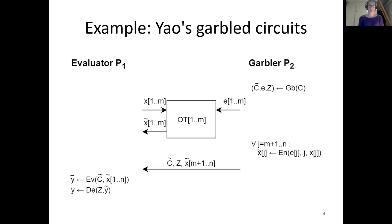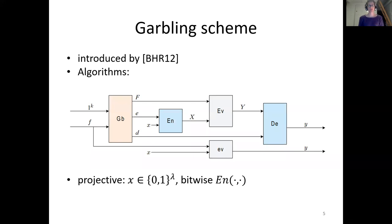The underlying construction, as pointed out by Bellare, Hoang, and Rogaway in 2012, is what they call a garbling scheme — a tuple of algorithms. We have five algorithms: a circuit garbling algorithm GB, an input encoding algorithm EN, an output decoding algorithm DE, and two evaluation algorithms — one for garbled circuit evaluation, which evaluates the garbled circuit and garbled inputs, and the regular circuit evaluation, which evaluates the circuit and inputs. For the rest of the talk, I'll assume the garbling schemes we're interested in are projective, meaning the input encoding is a bitwise function — you can encode input bits one by one.